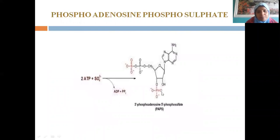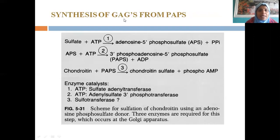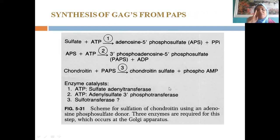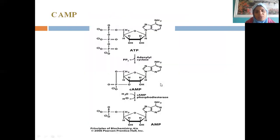Phosphoadenosine phosphosulfate (PAPS) is involved in the synthesis of glycosaminoglycans. The nucleotide PAPS is involved in the synthesis of chondroitin sulfate, which is a glycosaminoglycan studied in carbohydrate chemistry. The table of glycosaminoglycans is very important and should be thoroughly known.